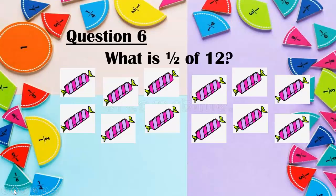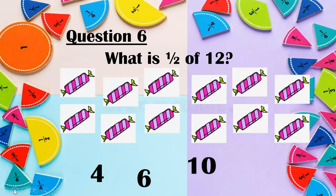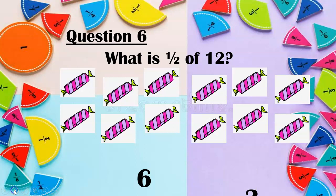Question six. What is half of twelve? We've got twelve sweets there. We can split them into two equal groups. How many would each group have? Is it four? Is it six? Is it ten? Or is it three? Remember, you can pause the video if you want to. You could share them out, or group them into twos and think: how many twos are in twelve? It's not four and it's not ten. Well done if you said six — there are six twos in twelve.